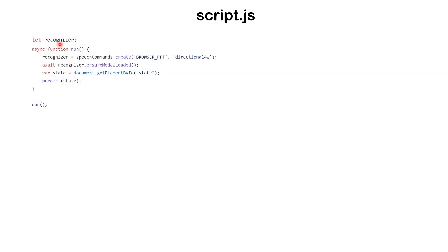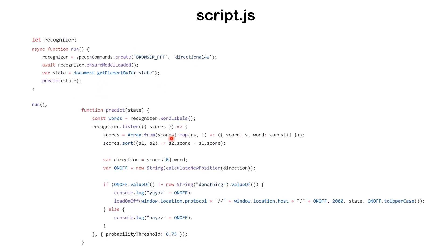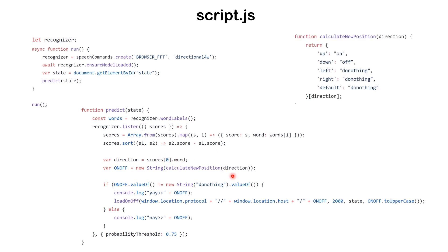This script is a simple recognizer. It uses the browser for transformation, loads the four directions — up, down, right, and left — and loads the model to do predictions. The prediction listens for these keywords, puts a score on each one, takes the best prediction, and sets it into a function. This function recognizes: if it's 'up,' it outputs 'on'; if it's 'down,' it outputs 'off.' Nothing happens for any other input. Once the result is either 'on' or 'off,' it calls the REST API to actually turn on and off the LED.